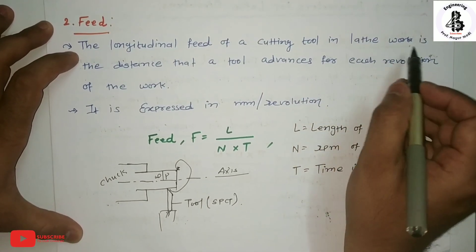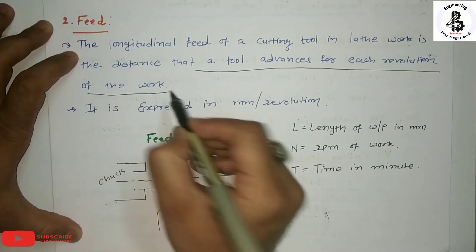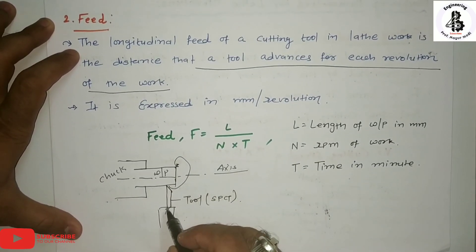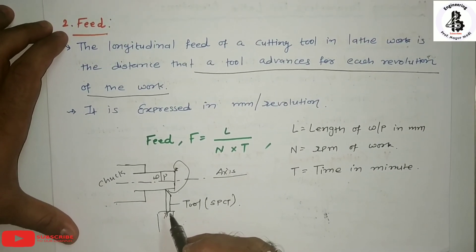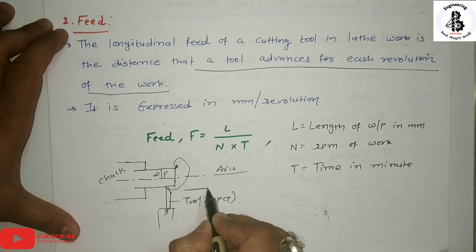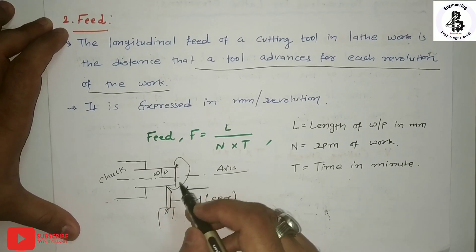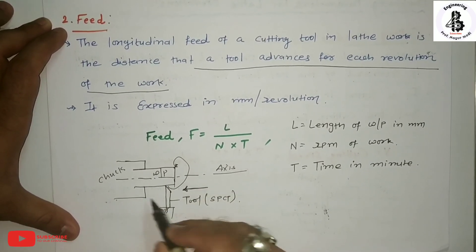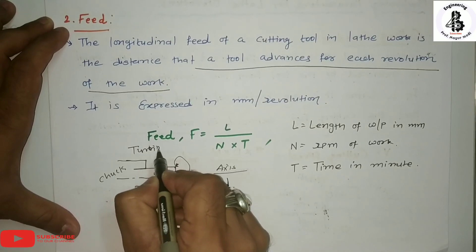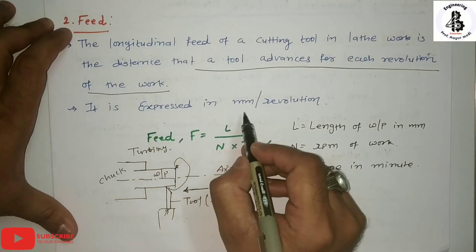Whenever the workpiece starts rotating about its axis, the tool advances in the longitudinal direction — the distance the tool advances for each revolution. For each revolution, the tool moves in this direction, providing a feed in case of turning operations on the lathe machine. Feed is basically expressed in mm per revolution.